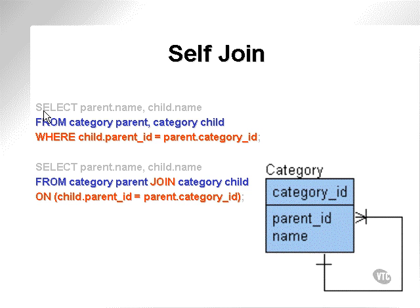As you can see from the example here, all we've done is we've taken the category table, which happens to have a parent ID, which we have discussed previously, and we're simply joining the parent and child records together — joining child categories to parent categories in the same category table.